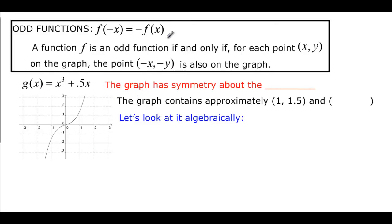So let's move to odd functions. Odd functions say that if I put in negative x, I'm going to get the opposite of f(x). Or if I have (x, y), I'm going to have (-x, -y). So if I have (1, 1.5), what that means is (-1, -1.5).